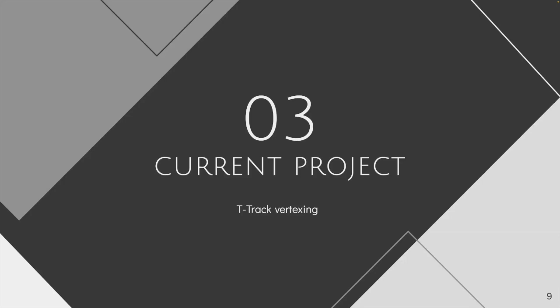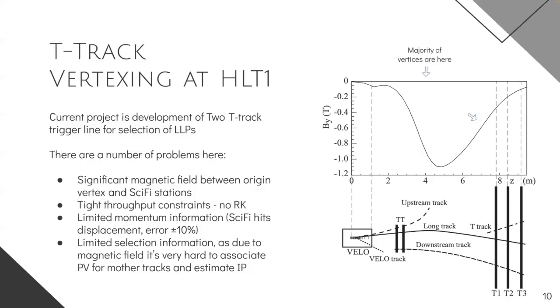And the last thing I would like to mention is actually my current project. So the thing I'm working on right now, and this is the T-track vertexing algorithm at the HLT1 level. And from the first look, it could be seen that it should be quite similar to the downstream vertexing algorithm, because we have like the similar vertices and similar tracks and so on. But there are a lot of problems here in comparison to the downstream. And actually, most of them are coming from the fact that between the origin vertex and the SciFi station, we have quite a strong magnetic field. And therefore, we need, we are not able to simply approximate this trajectory bending using some kind of the polynomials. But we also cannot use the, for example, Runge-Kutta to do this, because the Runge-Kutta algorithm is quite slow. And remember, we are working at the HLT1 level, which is a fast trigger, which has very tight throughput constraints.